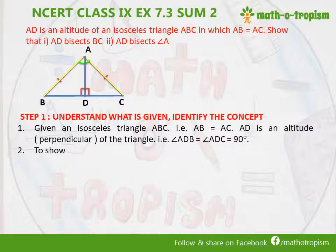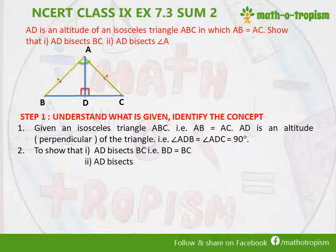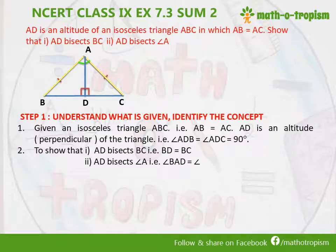We need to show that AD is bisecting BC, which means AD cuts BC into two equal halves, so BD should be equal to DC. Similarly, AD also bisects angle A, which means it cuts angle A into two equal halves, so angle BAD should be equal to angle CAD. This is what we need to prove.